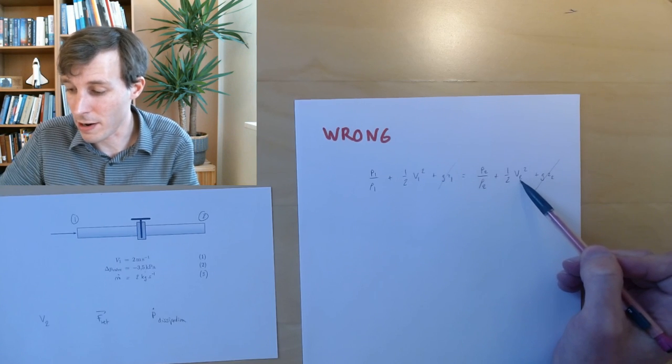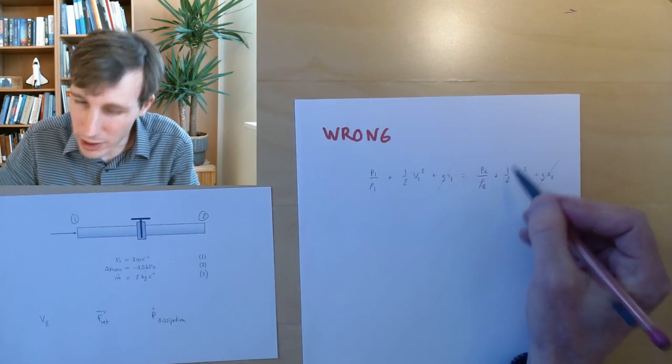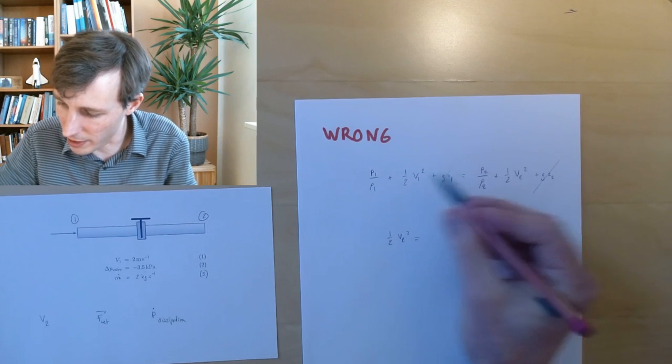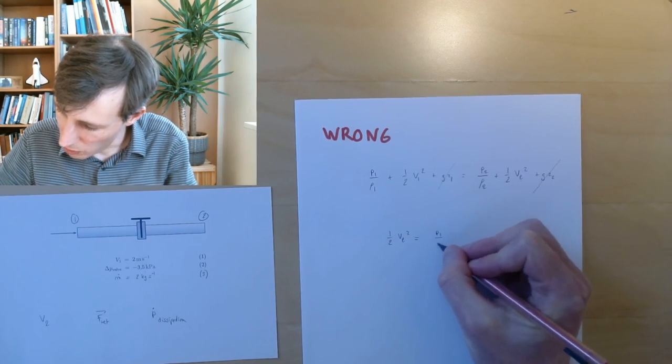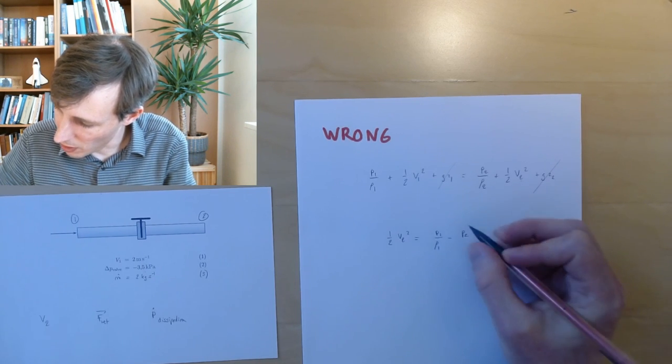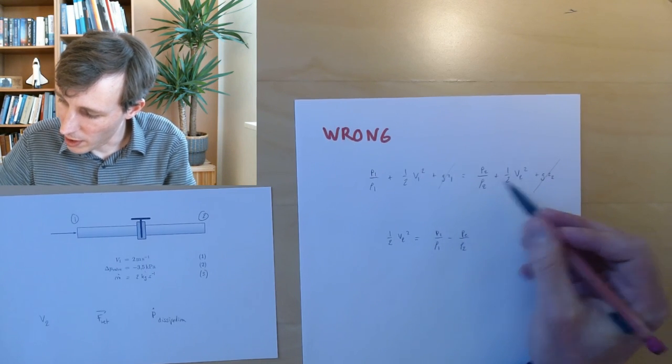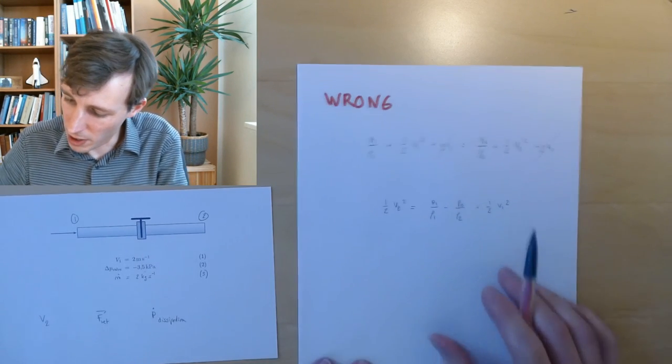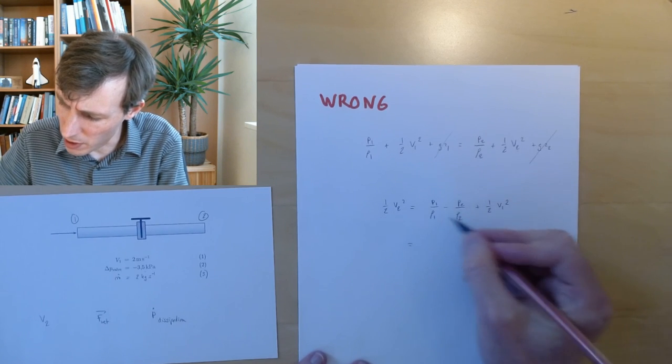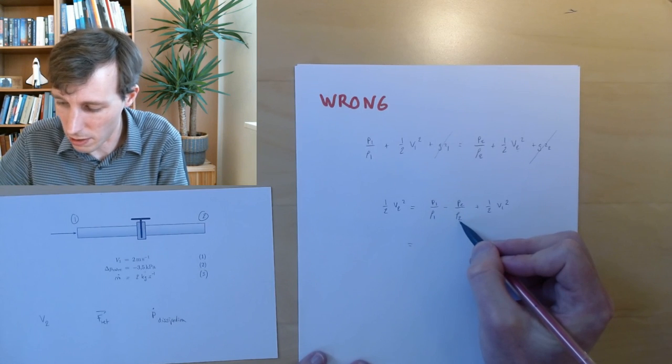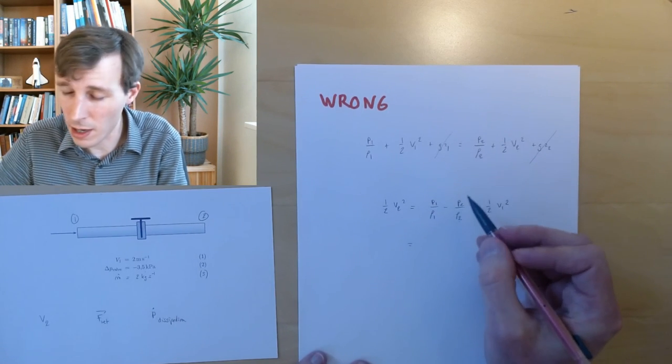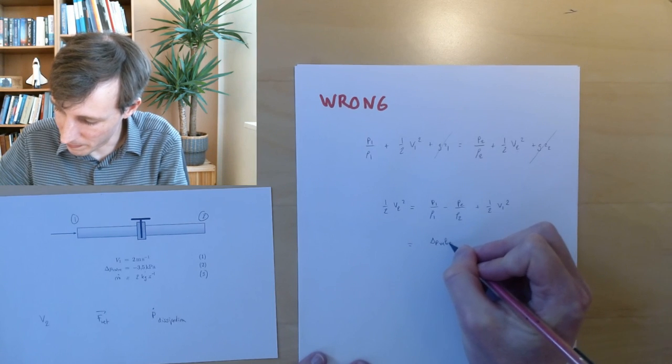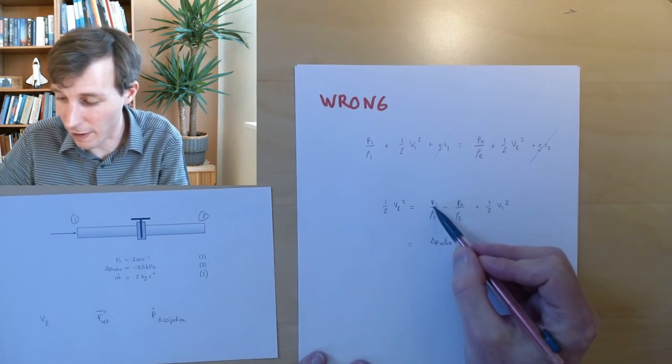Let's try to isolate V2 and put it as a function of all the other ones. One half V2 squared equals P1 over rho 1 minus P2 over rho 2 plus 1 half V1 squared. I'm going to do a little cleanup. Rho 1 equals rho 2, this is density. And P2 minus P1 is the delta P that I have for the valve. So this is delta P of the valve, and I need to put a minus in there because delta P of the valve is P2 minus P1 and I have P1 minus P2.